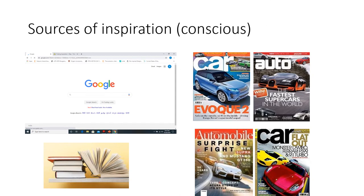The traditional sources of inspiration include Google, magazines, and books. These are all conscious efforts. Google is the largest database which can direct the designer to a particular type of inspiration. Designers browse magazines in order to know about the latest trends and design news. Books are another source of inspiration.